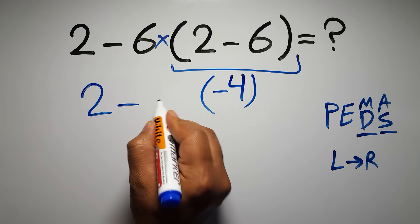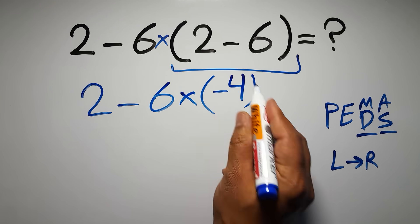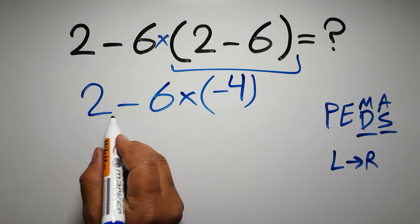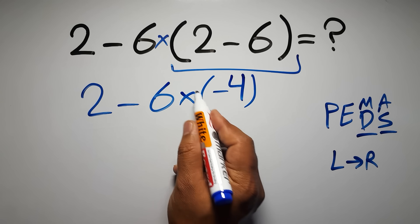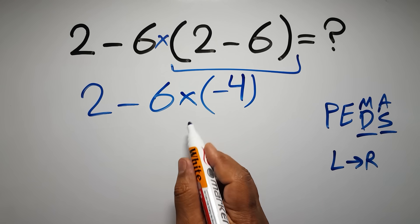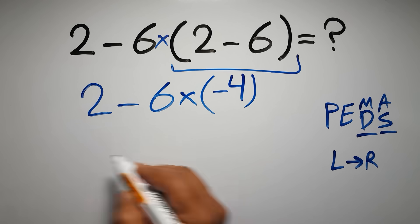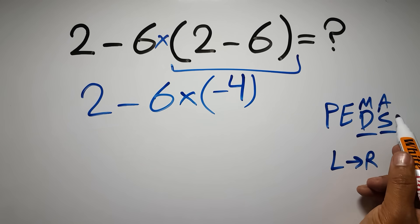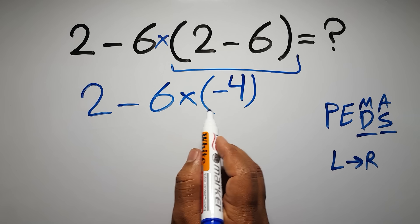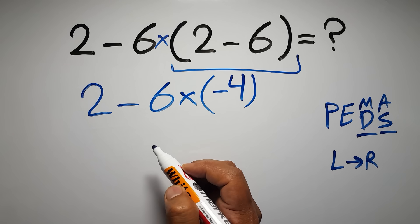So we have 2 minus 6 times negative 4. Now we have 1 subtraction and 1 multiplication. According to the PEMDAS, multiplication has higher priority than subtraction, because multiplication comes before subtraction, so here first we have to do this multiplication.